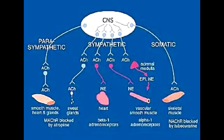Describe how epinephrine and norepinephrine are released into the blood. The preganglionic neuron causes the release of acetylcholine, which stimulates the chromaffin cells in the adrenal medulla. Since the chromaffin cells of the adrenal medulla act as a modified sympathetic ganglion, they are able to release epinephrine and norepinephrine directly into the blood.